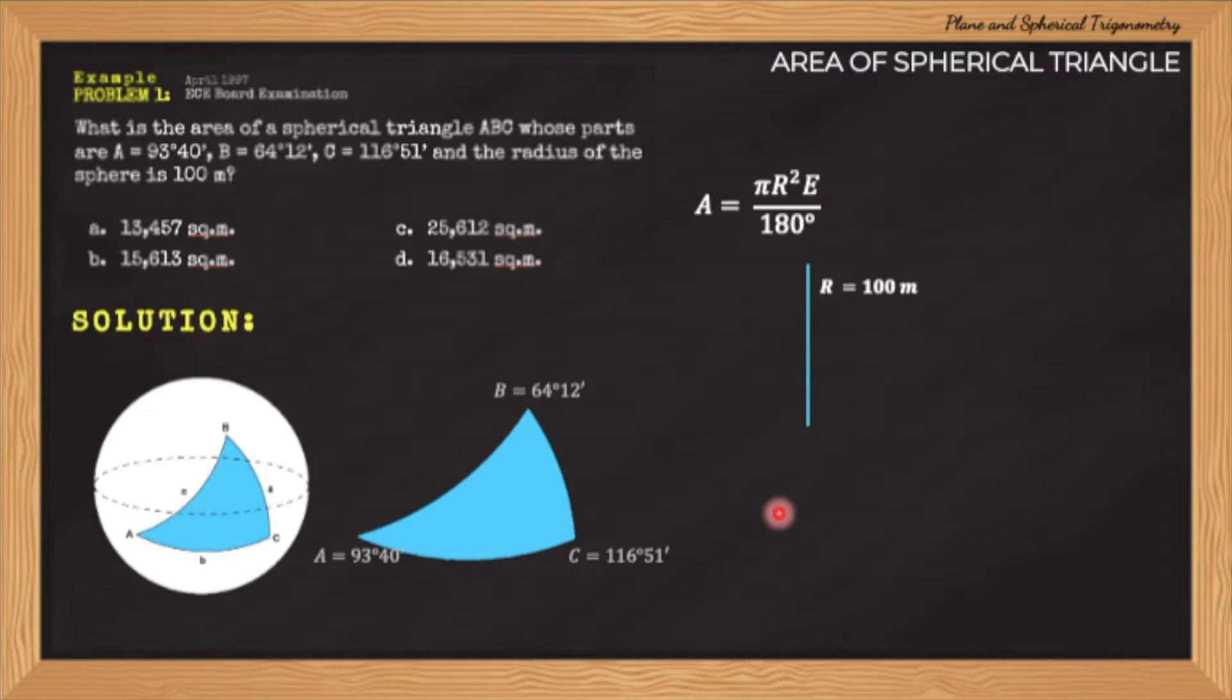We must compute the value of the spherical excess using this formula which is A plus B plus C minus 180 degrees. As you can see from the given, we have the values of the three angles A, B, and C of the spherical triangle. We can substitute the values of these three angles into the formula which will give us a spherical excess value of 94 degrees and 43 minutes.